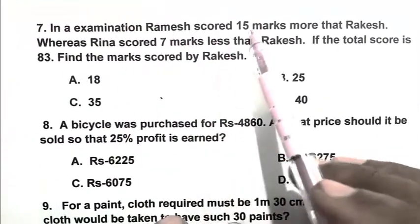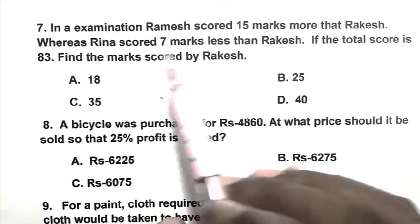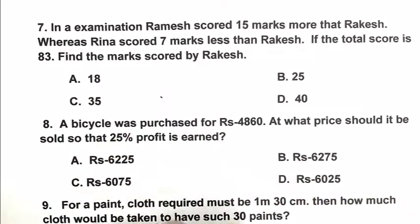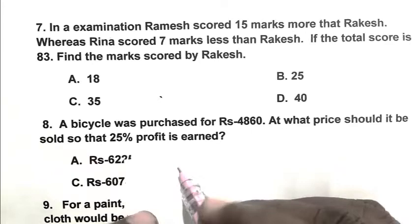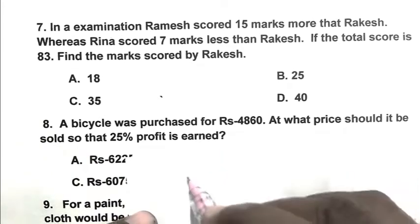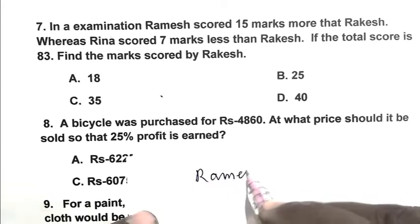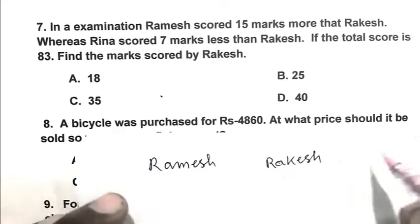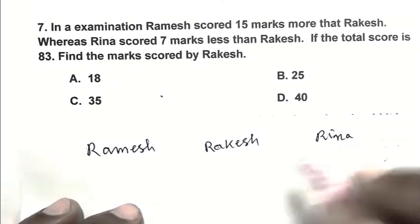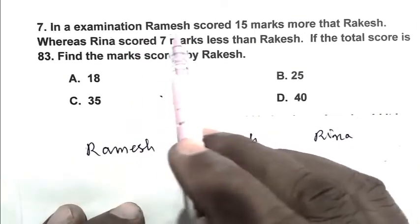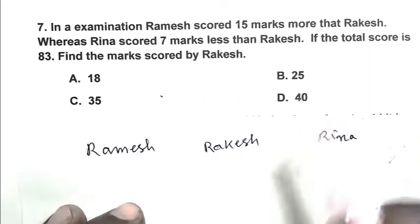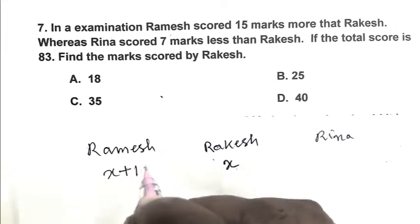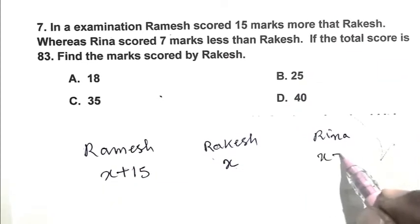Question number 7. In an examination, Ramesh scored 15 marks more than Rakesh, whereas Rina scored 7 marks less than Rakesh. If the total score is 83, find the marks scored by Rakesh. Let Rakesh score X marks. So Ramesh scores X plus 15, and Rina scores X minus 7.